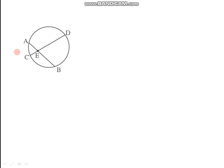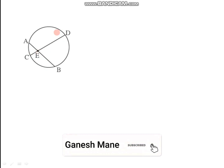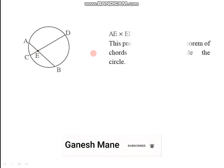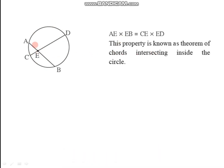This theorem is called the Theorem of Internal Division of Chords. To revise: if chord AB and chord CD intersect each other at point E which is inside the circle, then AE into EB equals CE into ED. This property is known as the theorem of chords intersecting inside the circle.